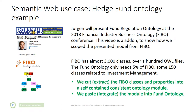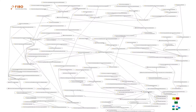We will extract — we cut the FIBO classes and properties into a self-contained, consistent ontology module. And then we paste — we integrate that module into the fund ontology module.